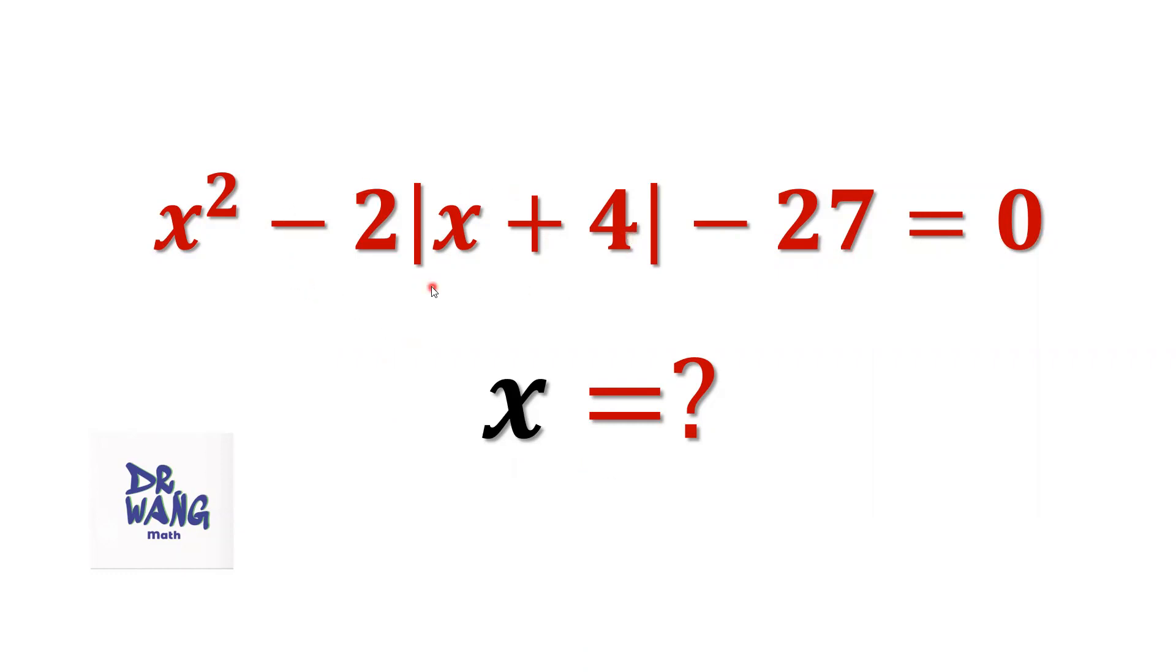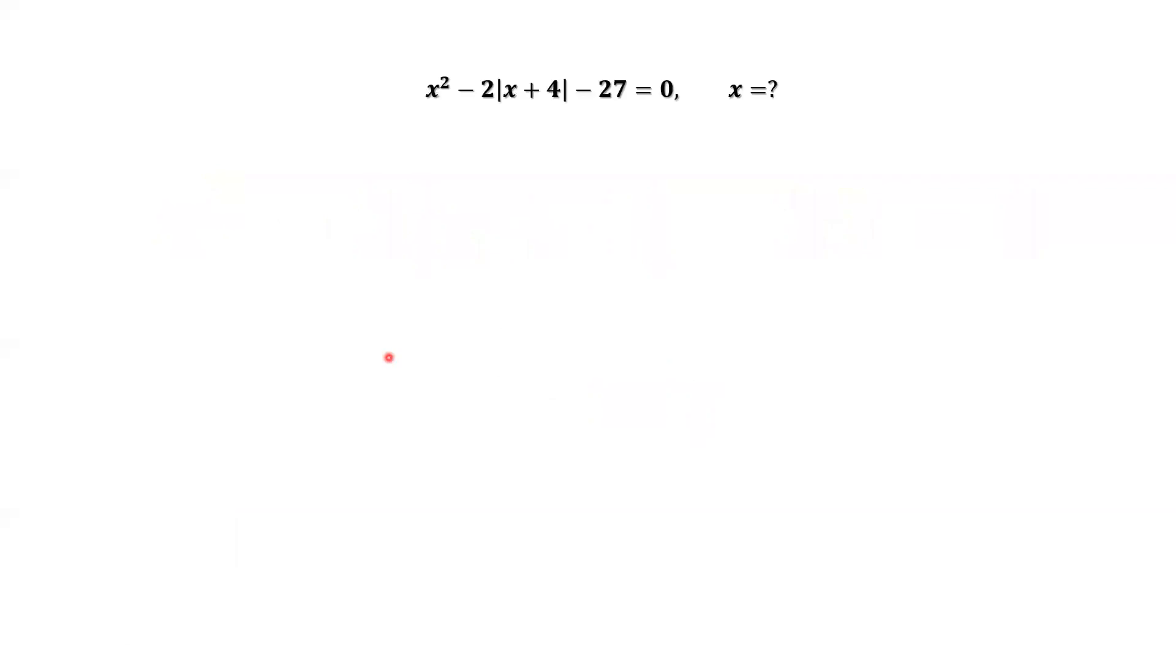This is a quadratic equation. It is a special equation containing the absolute value sign. We need to get rid of the absolute value sign first. Then we can solve this equation. How? Here is the detail. x plus 4 equals 0 implies x equals negative 4. This is a cutting point. We cut the whole x into two parts.